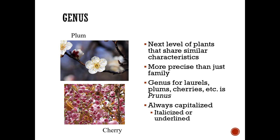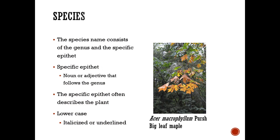The genus is always capitalized and always italicized or underlined. The species consists of a genus and a specific epithet — a noun or adjective that follows the genus, often describing the plant, written in lowercase and italicized or underlined. For example, Acer macrophyllum: macro means big, phyllum means leaf — so big leaf maple.